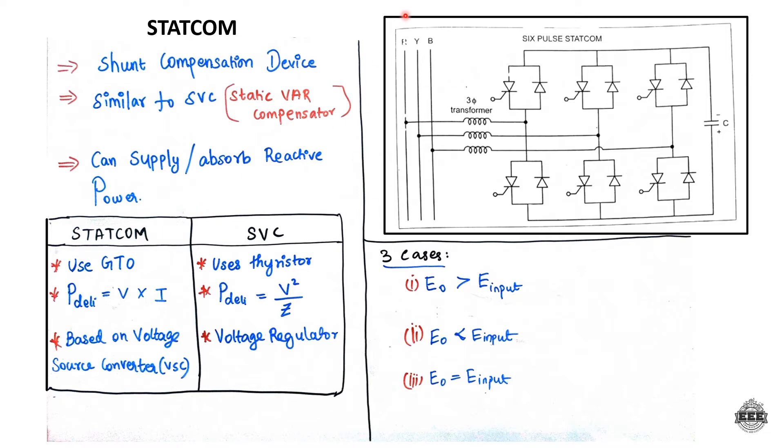Let's look at the diagram. We have a DC capacitor connected to a three-phase inverter, which is a voltage source converter. The inverter converts DC to AC output.